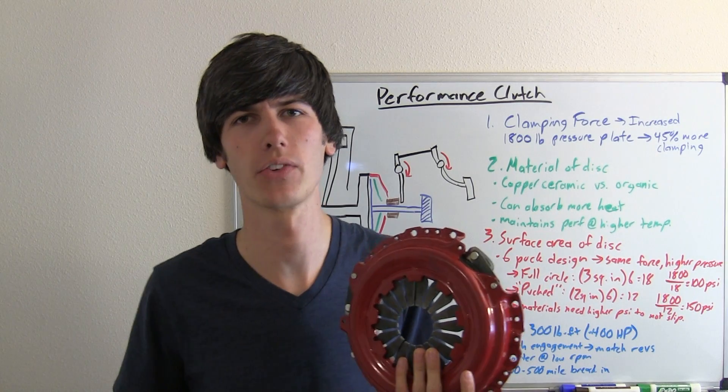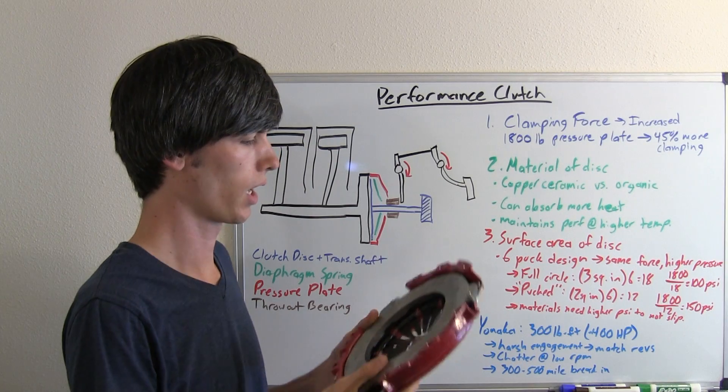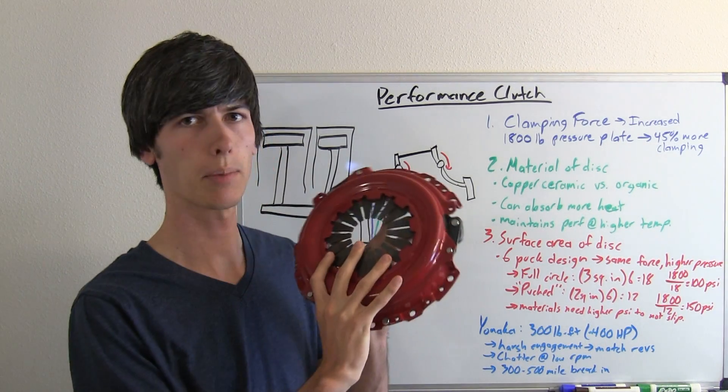So there's really three main differences between a typical OEM style clutch versus a performance clutch. One of the first things that's going to change is the clamping force.